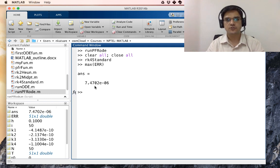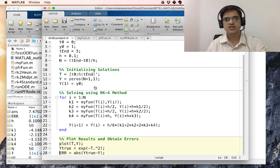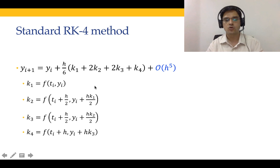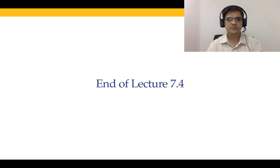As we see when we went to RK4 standard method, there was a significant drop in the error. The error dropped from around 2 into 10 to the power minus 3 to 7 into 10 to the power minus 6. So for the same step size, RK4 method is significantly more accurate than RK2, and that is one of the reasons for the popularity of RK4 method.